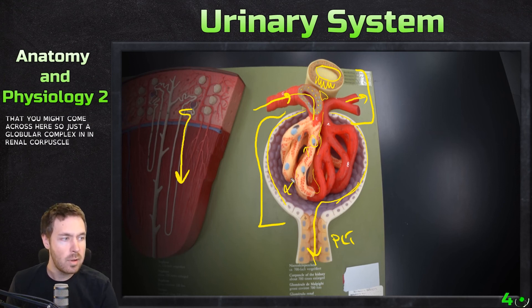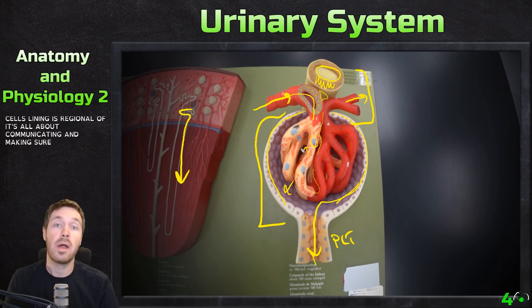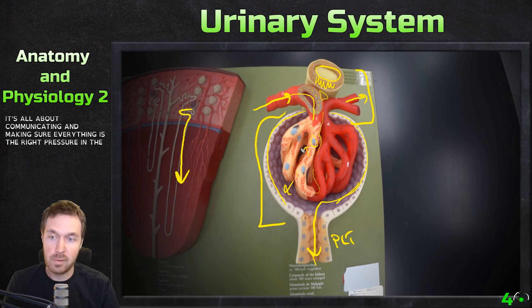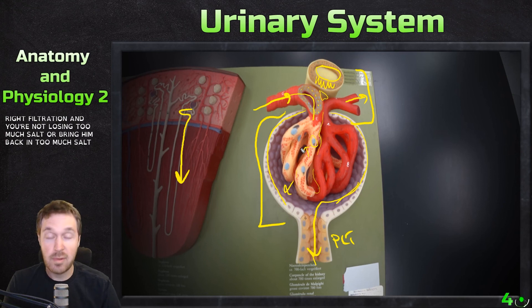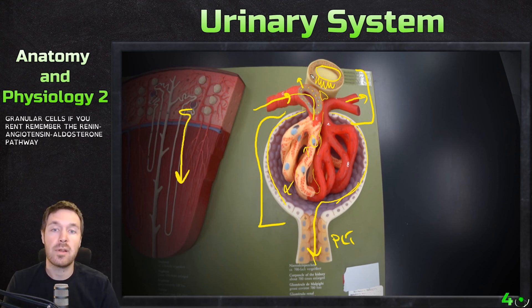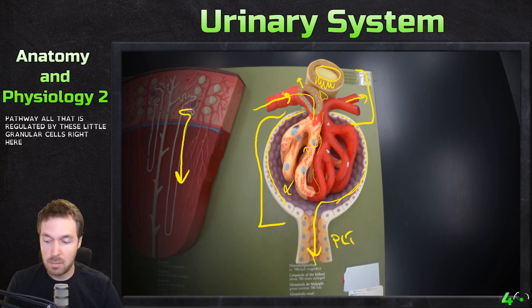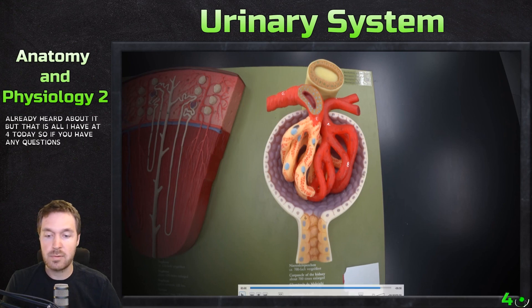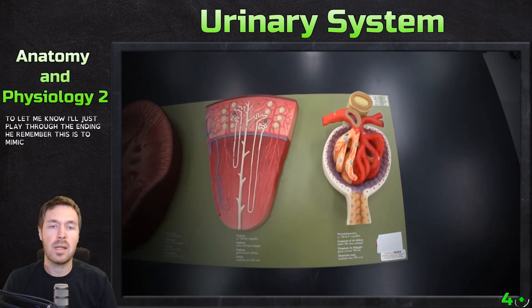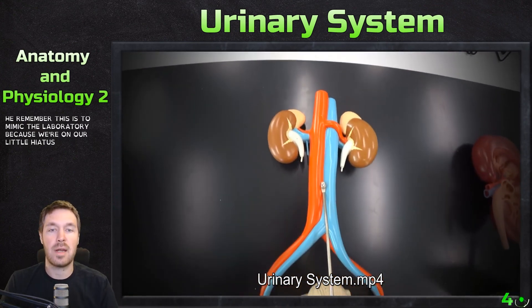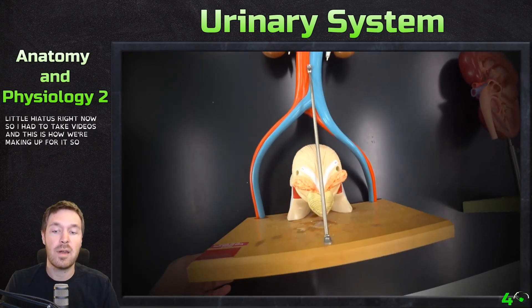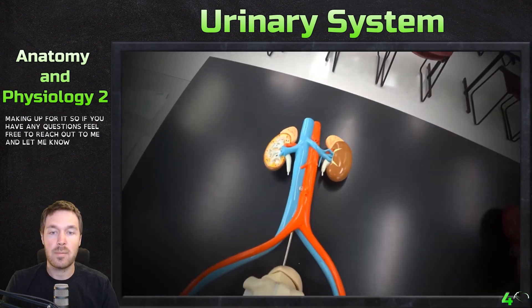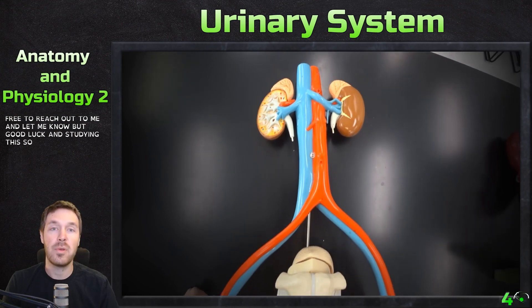Everything in this region is about regulating pressure, filtration, and salt balance. Renin is released from the granular cells as part of the renin-angiotensin-aldosterone pathway. That covers all the important structures of the kidney anatomy. If you have any questions, feel free to reach out. This video was made to mimic the laboratory experience during our current hiatus. Good luck studying, and have a great day!